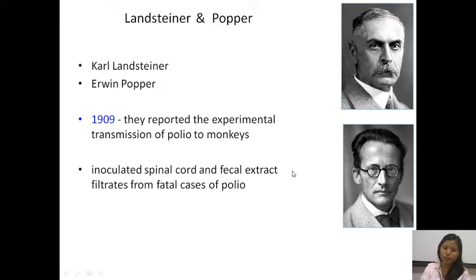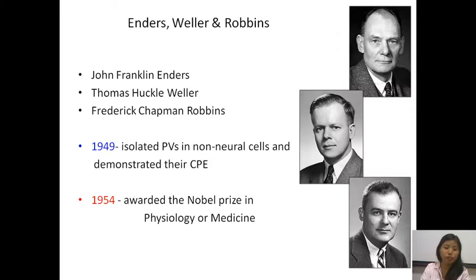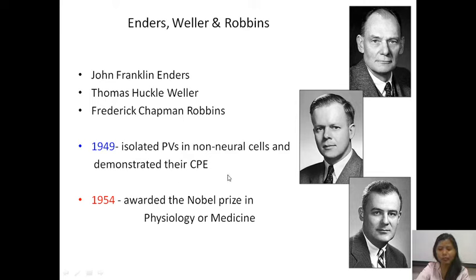Landsteiner and Popper experimentally transmitted polio to monkeys by inoculating spinal cord and fecal extract filtrates from fatal cases of polio. Through animal experimentation they proved an infectious etiology. Enders, Weller, and Robbins were then able to isolate the virus in non-neural cells, which was critically important — isolating them in neural cells or propagating in laboratory animals was not sufficient to develop an antigen or vaccine.